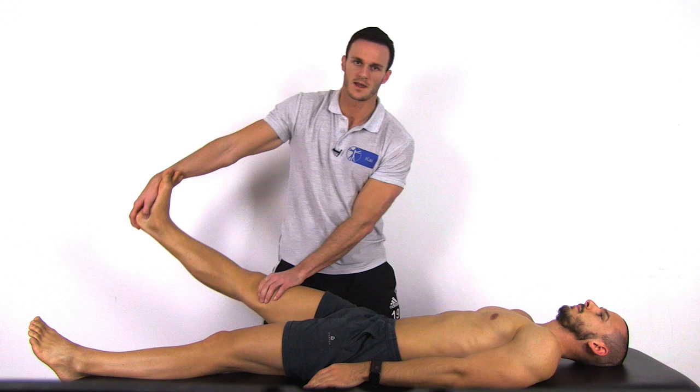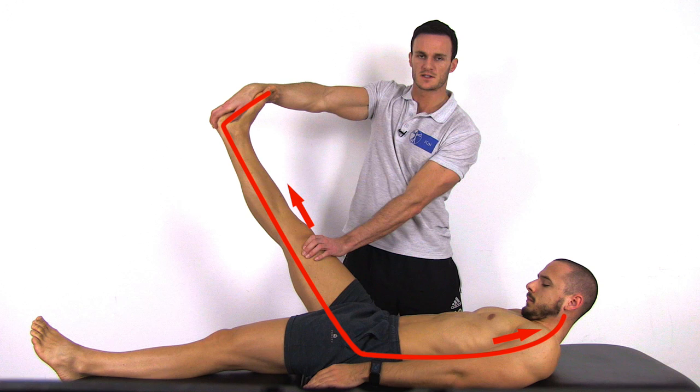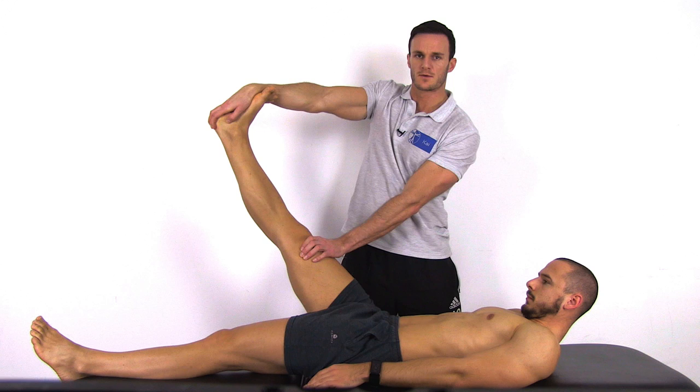Continue the movement until end range is reached or the patient's symptoms are reproduced. Next, ask the patient to flex his head with a chin tuck, thus flexing the cervical spine. In this position, we will have maximal tension of the dura. At last, release the dorsiflexion, which will allow the dura to move into cranial direction towards the starting position.